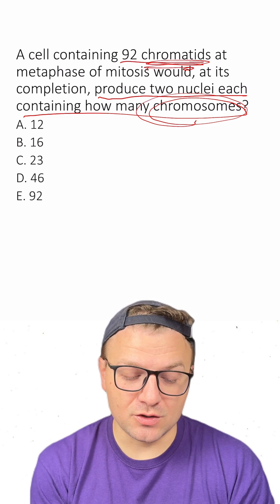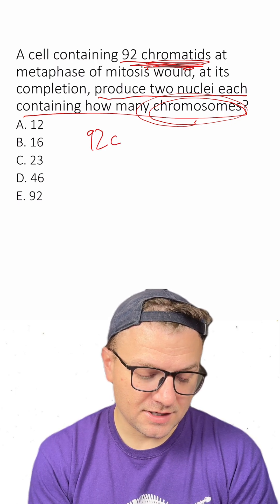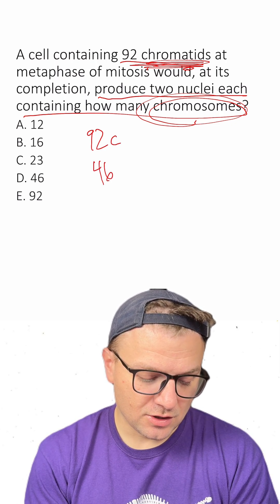So we're looking at starting with 92 chromatids. So we're starting out with 92 chromatids, but 46 chromosomes.